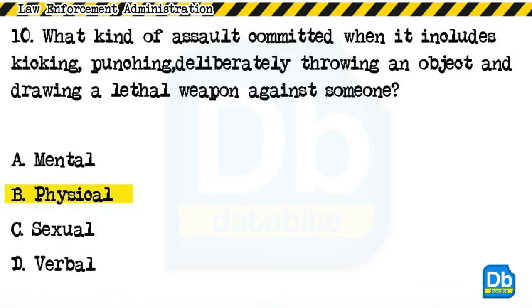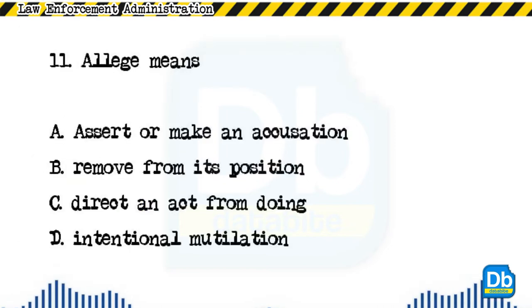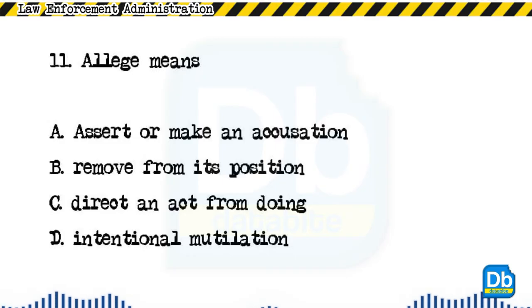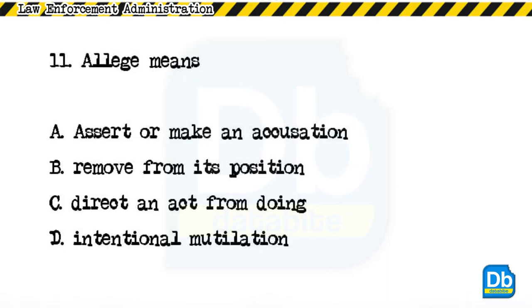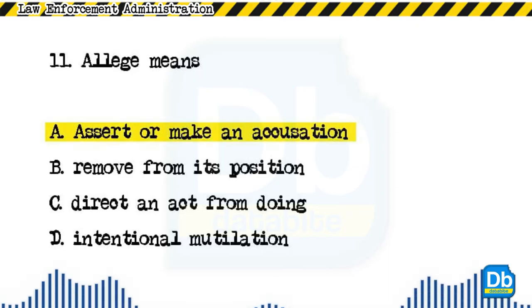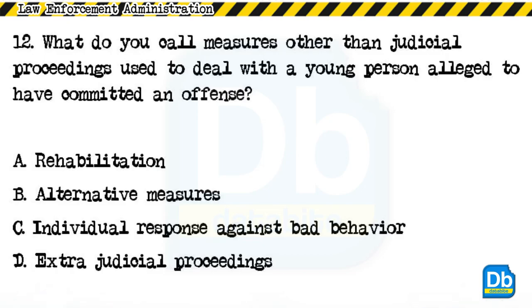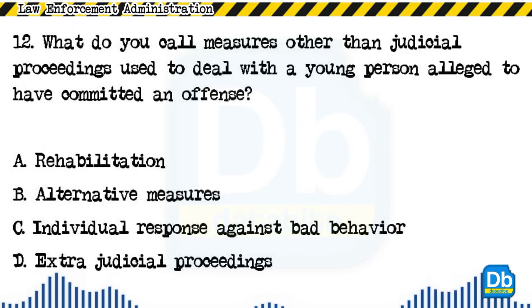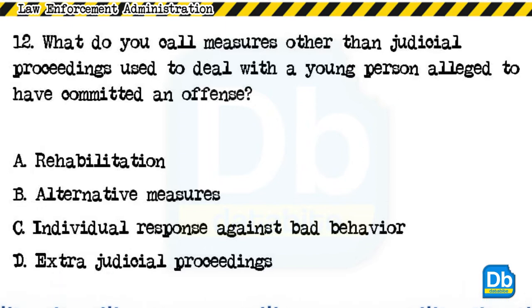The answer is B, physical. Question 11: Allege means: a) assert or make an accusation, b) remove from its position, c) direct an act from doing, d) intentional mutilation. The answer is A, assert or make an accusation. Question 12: What do you call measures other than judicial proceedings used to deal with a young person alleged to have committed an offense? a) rehabilitation, b) alternative measures, c) individual response against bad behavior, d) extrajudicial proceedings.